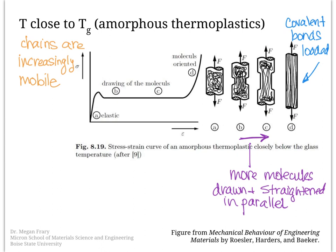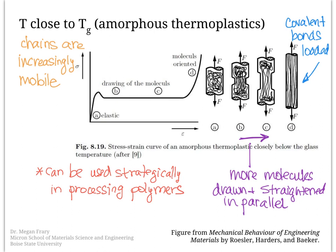This process is sometimes used strategically to draw the thermoplastic and manufacture a material where the chain molecules are arranged in parallel. An example is aramid fibers, which are used often in composite materials. These can have a yield strength of 4.7 GPa and a Young's modulus in the fiber direction of up to 450 GPa — so drawing can be used strategically to generate an aligned polymer with exceptional mechanical properties.